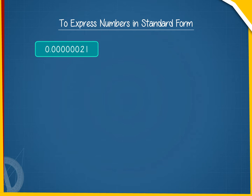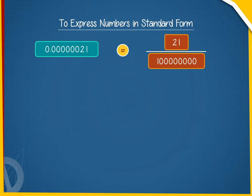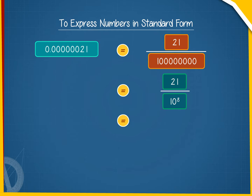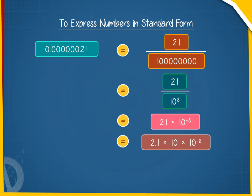(c) 0.00000021 = 21 ÷ 1,000,000,000 = 21 ÷ 10⁸ = 21 × 10⁻⁸ = 2.1 × 10 × 10⁻⁸ = 2.1 × 10⁻⁷.